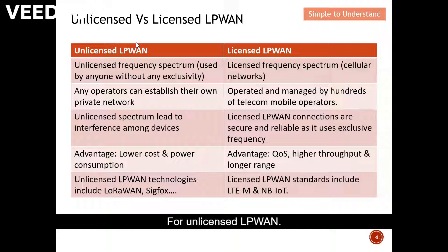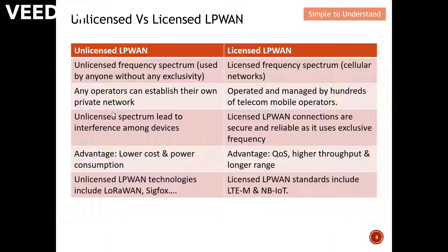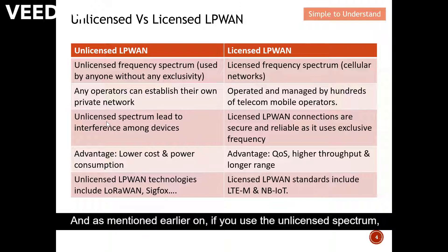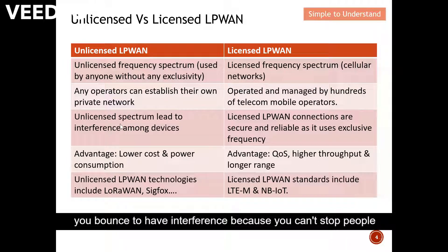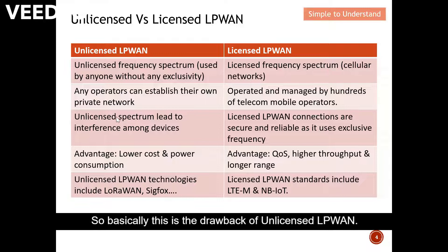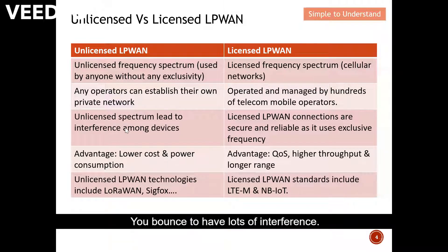For unlicensed LPWAN, they use the unlicensed spectrum to transmit. As mentioned, if you use the unlicensed spectrum you are bound to have interference, because you can't stop people from using that spectrum. This is the main drawback of unlicensed LPWAN — you are bound to have lots of interference.